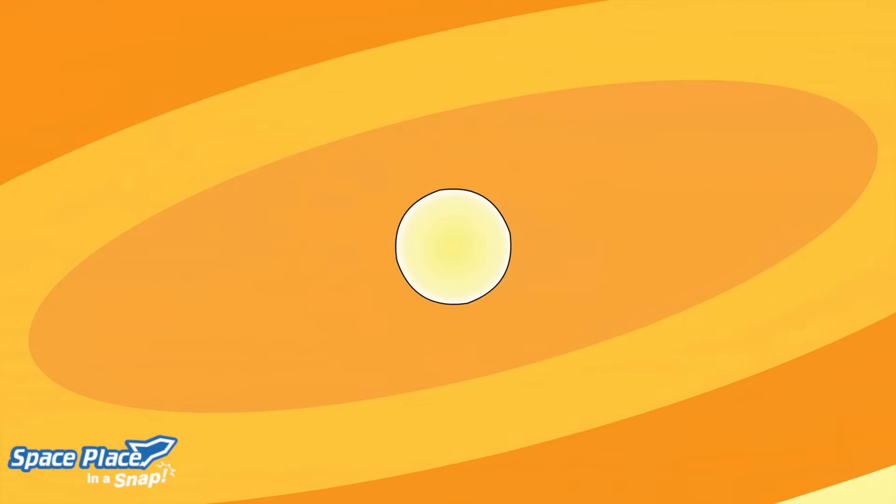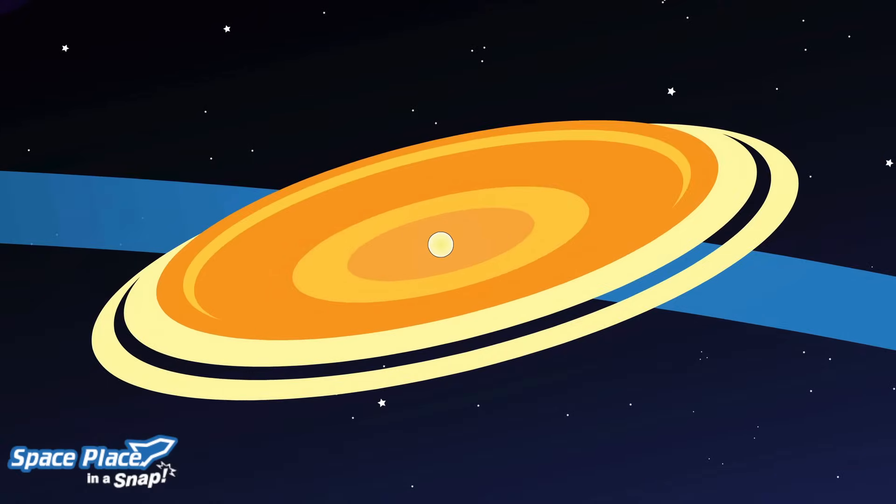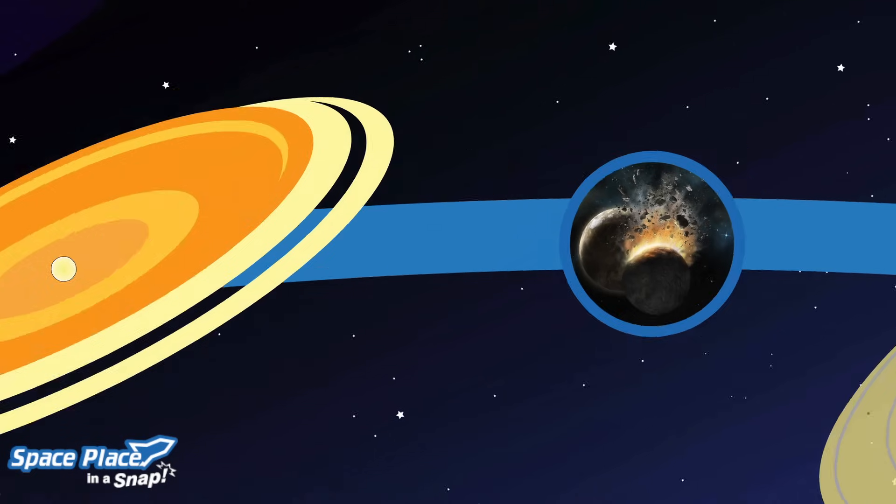Even though the sun gobbled up more than 99% of all the stuff in this disk, there was still some material left over. Bits of this material clumped together because of gravity.